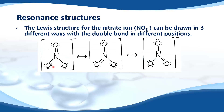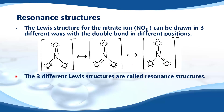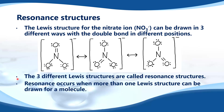Here we have the three different Lewis structures that could be drawn for the nitrate ion. As you can see, the double bond is in a different position in each of the Lewis structures. The three different Lewis structures are called resonance structures.